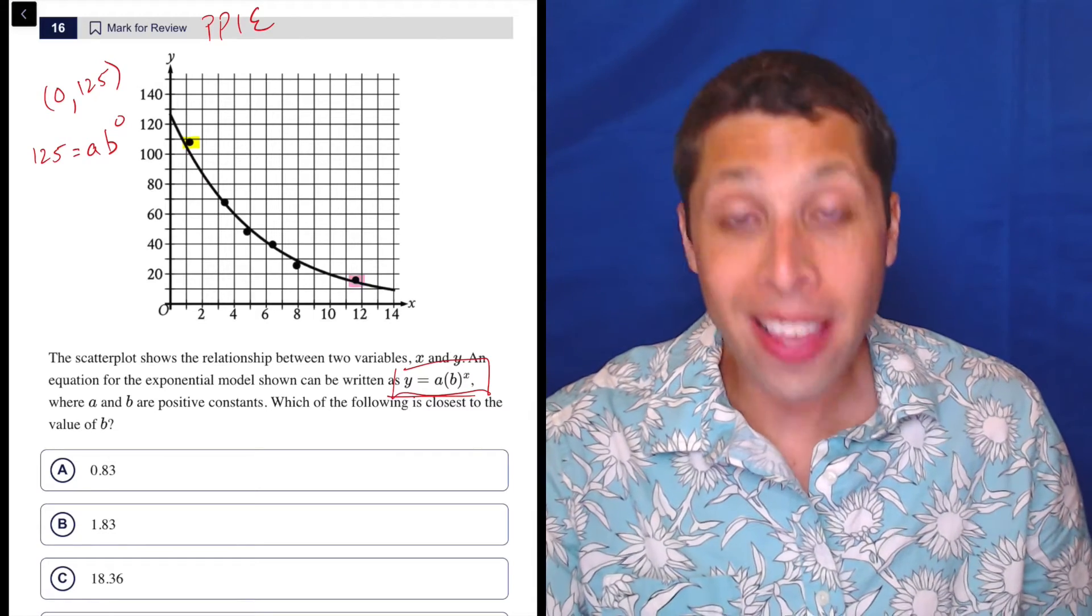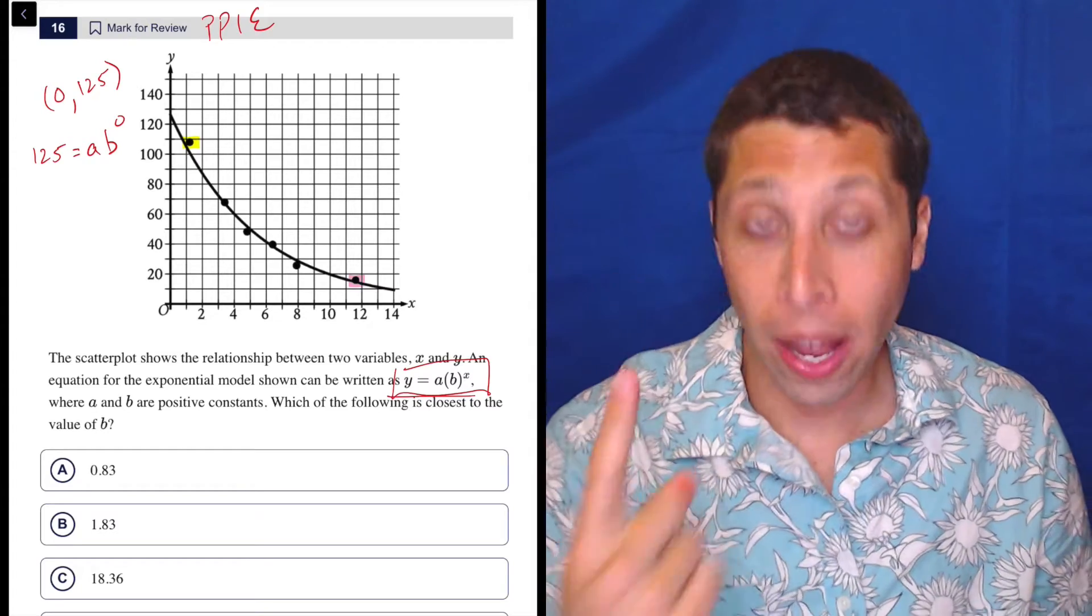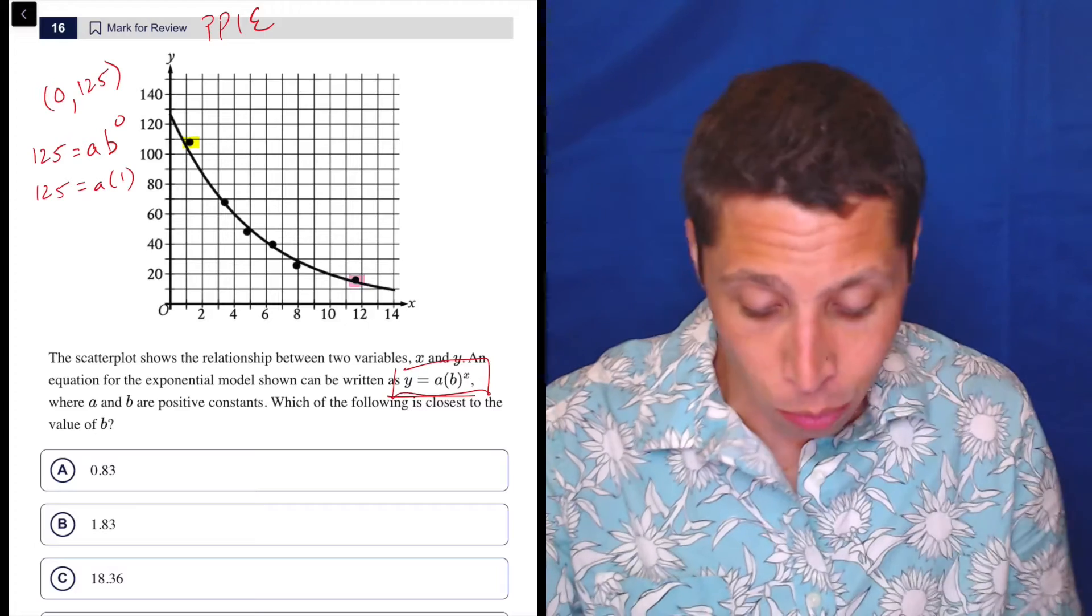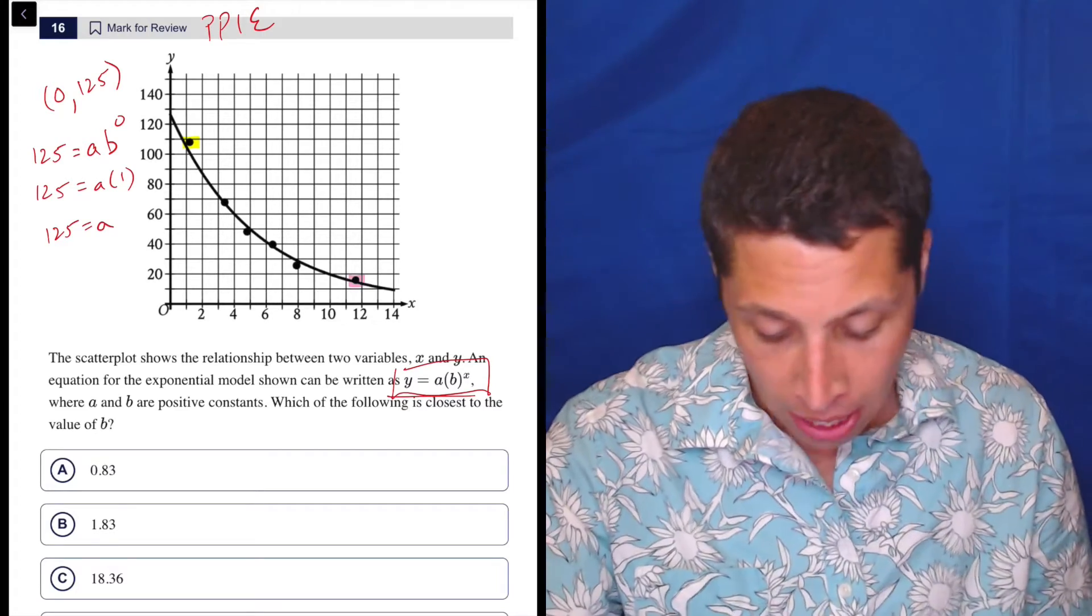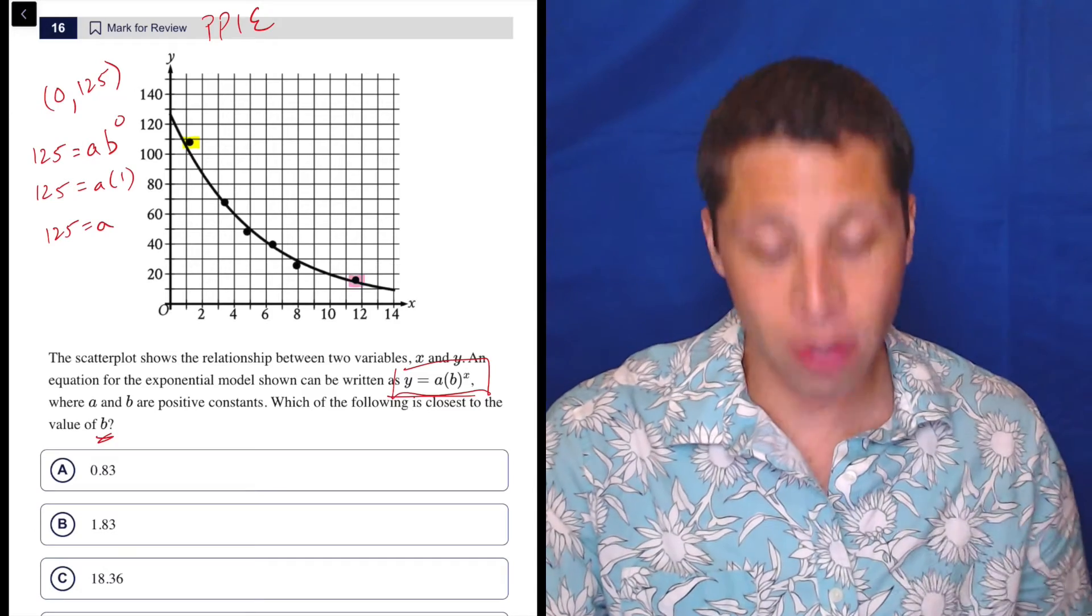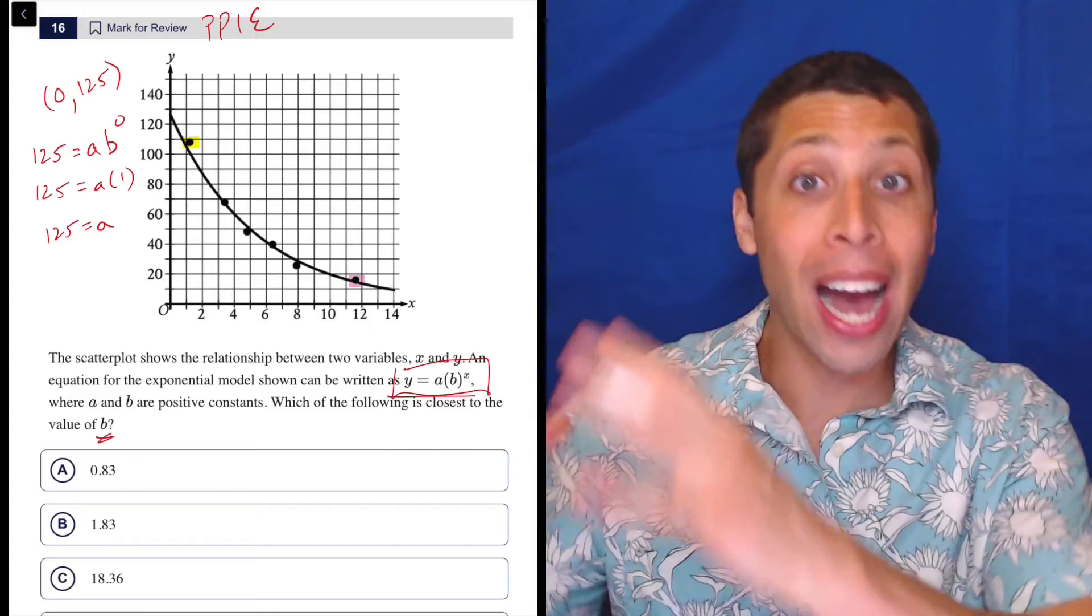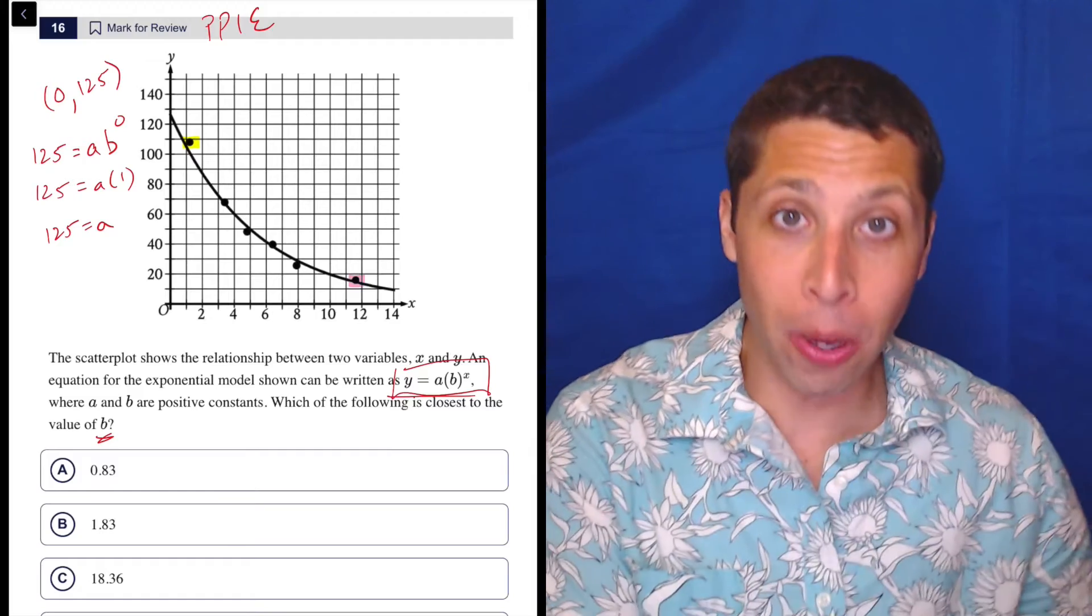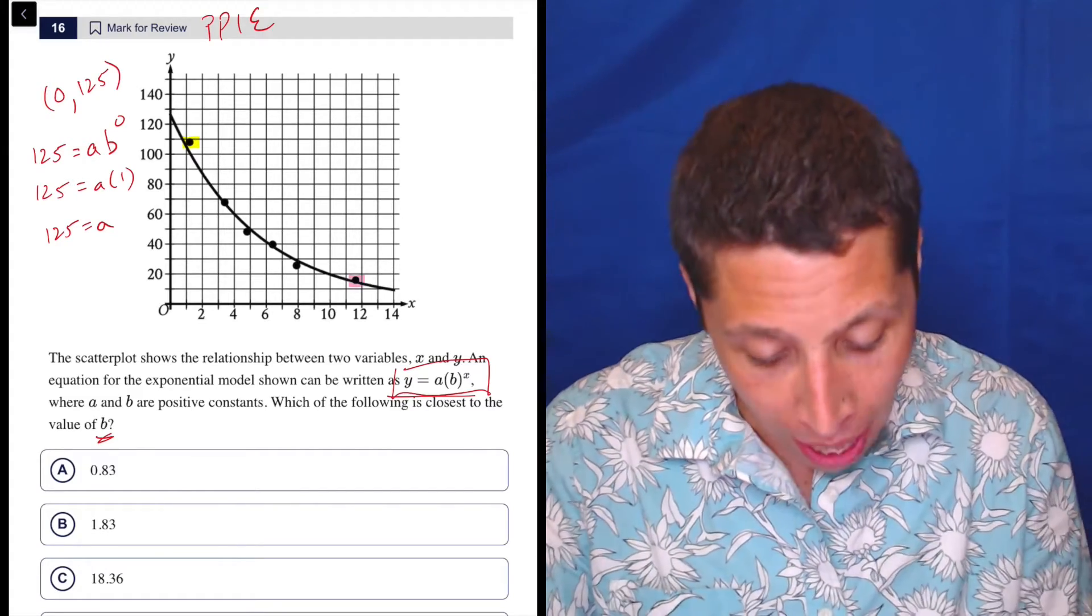And why is that so important? Well, if x is zero, then the b gets wiped out because anything to the zero is one. So really what we're just saying now is a times one is 125. So we just figured out part of our equation. A is 125. But we don't want a, we want b. So this is why with these questions, we almost always need a second point because now once we've got a, which is a constant, so it's not going to change, we can now choose another point and we only will have one missing piece and that'll be the b that we want.